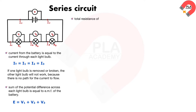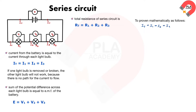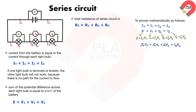The total resistance of a series circuit R_T is equal to the sum of the resistance of each component. This can be proven mathematically. We can cancel out all of I because they are equal. So, R_T equals R_1 plus R_2 plus R_3.